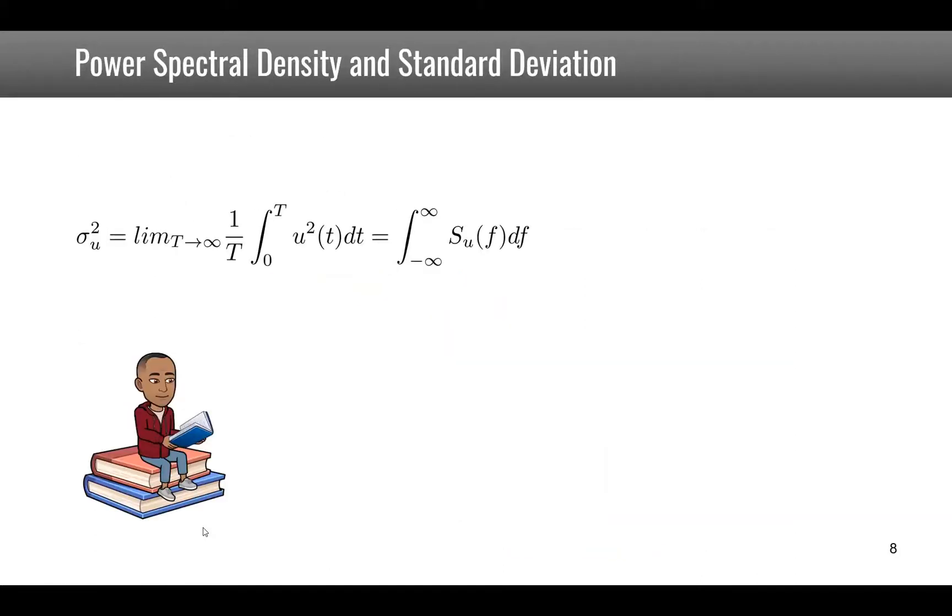This shows that sigma squared, which is the limit when T tends to infinity of 1 over T integral of u squared, is equal to the integral of the whole frequency band of Su(f) df, which means that if you know the power spectral density, you know the variance of the wind velocity. If u(t) is real, which is the case for wind velocity, the spectrum is symmetrical, and we can write this as 2 times the integral from 0 to infinity of Su(f) df.